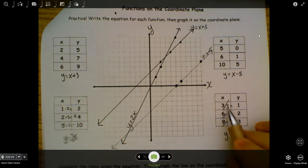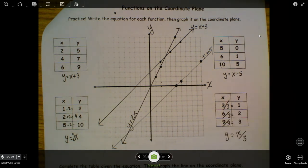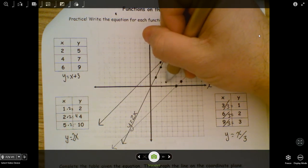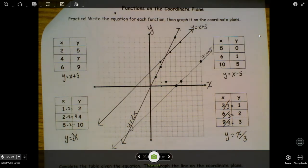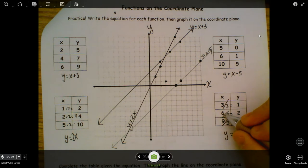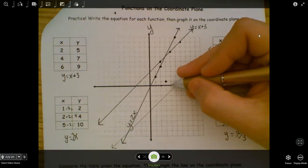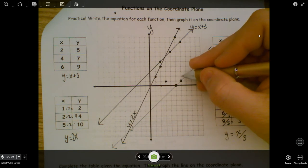And then finally, 3 and 1. So I go over 3, up 1. One, two, three. And you can see it's getting crowded. This is why you do one at a time. Over 6, up 2. One, two, three, four, five, six. One, two, three.